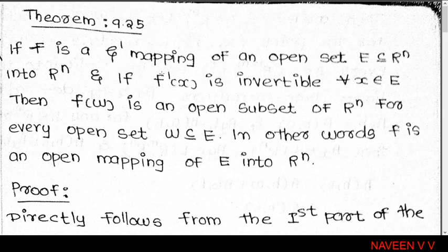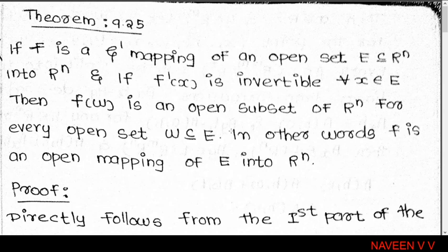Theorem 9.25: If f is a C¹ mapping and f'(x) is invertible for all x belonging to A, then f(W) is open in Rⁿ. We can prove it.